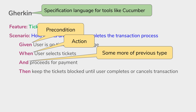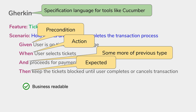Tools like Cucumber can understand Gherkin syntax and convert this scenario into automation tests. 'Given' is like a precondition — given the user is on the ticket booking page. 'When' is like an action — when the user selects tickets. 'And' is used for more of the previous type — in this case more action, 'and proceeds for payment'. 'Then' is like an outcome or expected result.